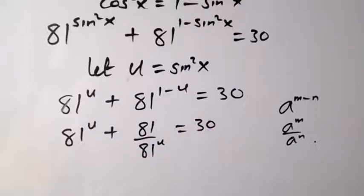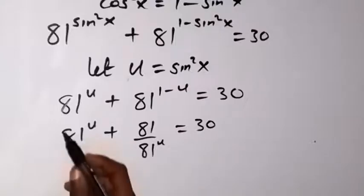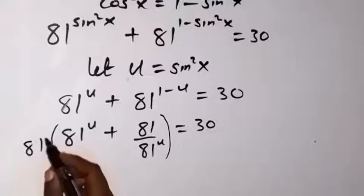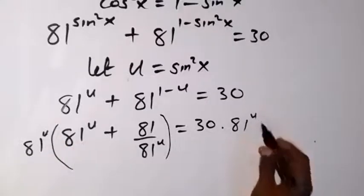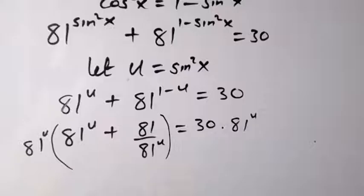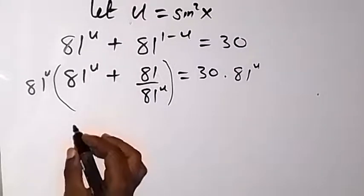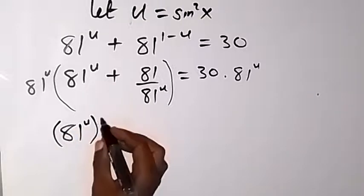From there, we clear the fraction by multiplying both sides by 81^u. When we multiply this side by 81^u and also multiply the other side by 81^u, we get 81^u times 81^u, which gives us 81^u raised to power 2.